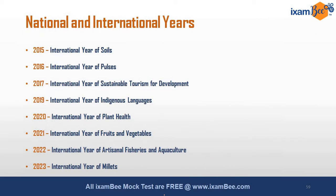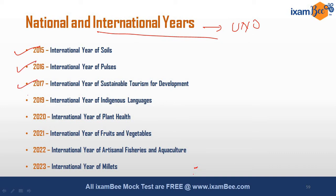National and international years declared by the UNO: 2015 was the International Year of Soil, 2016 was the International Year of Pulses, 2017 was for Sustainable Tourism Development, 2019 was the International Year of Indigenous Languages, 2020 is the International Year of Plant Health, 2021 will be the Year of Fruits and Vegetables, 2022 will be the Year of Fisheries and Aquaculture, and 2023 is declared as the International Year of Millets — this was asked in the Phase 1 exam of NABARD this year.